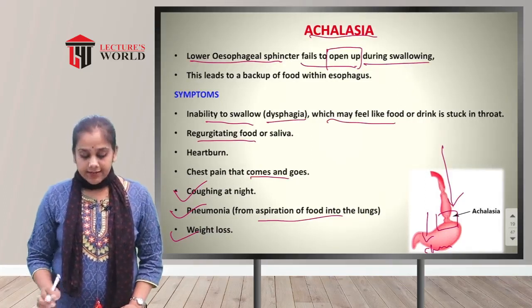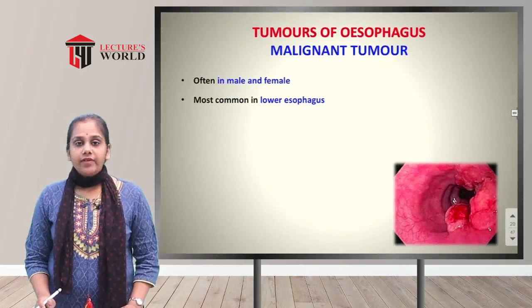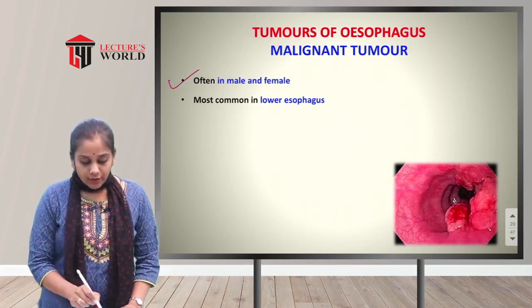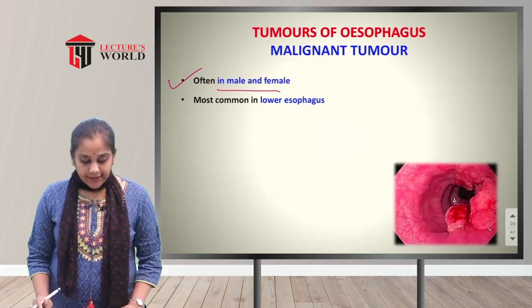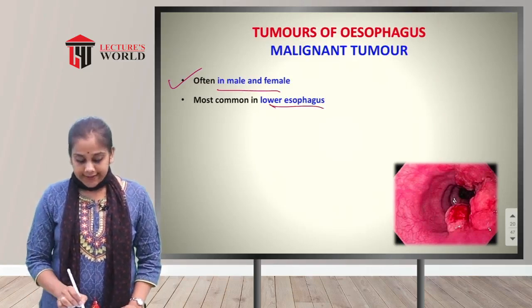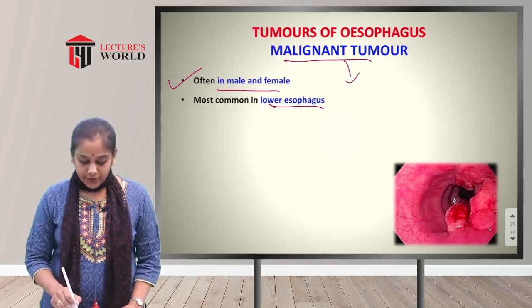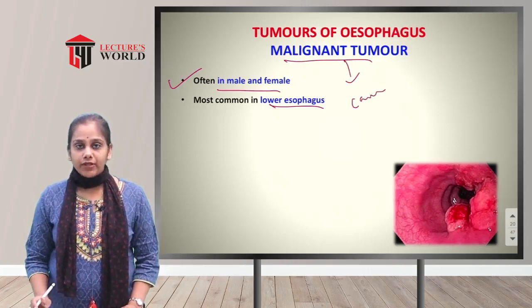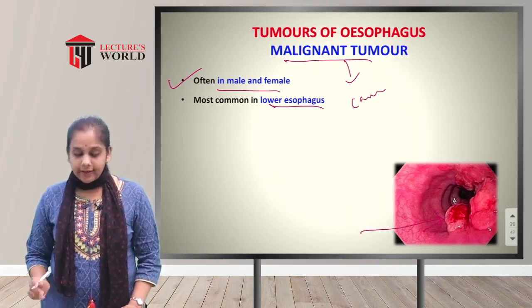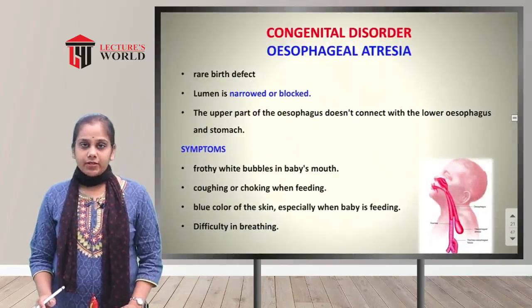The tumor of the esophagus: the first is a malignant tumor, found in both male and female. It is most commonly found in the lower esophagus. Tumors in the lower esophagus may be benign or malignant — malignant refers to cancerous tumor cells found in the lower part of the esophagus.